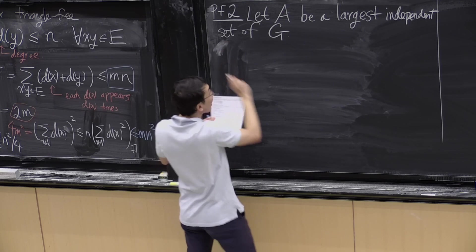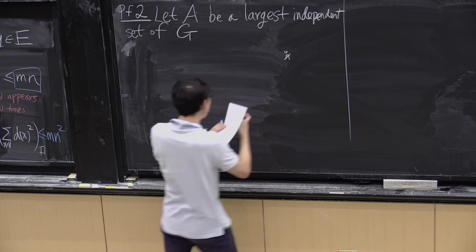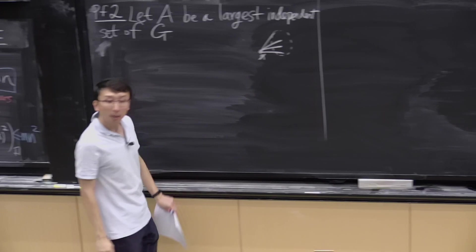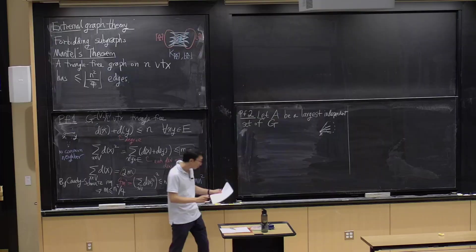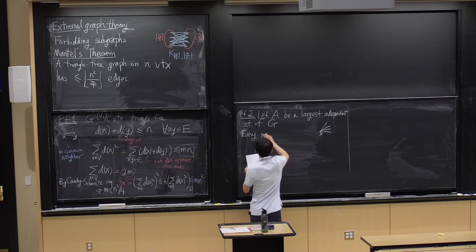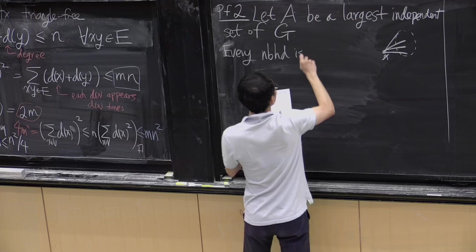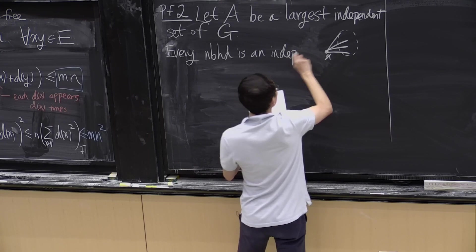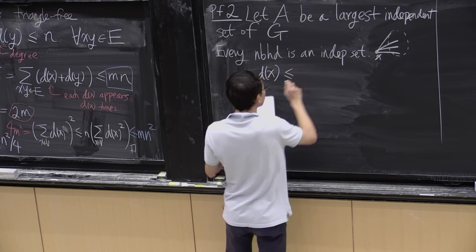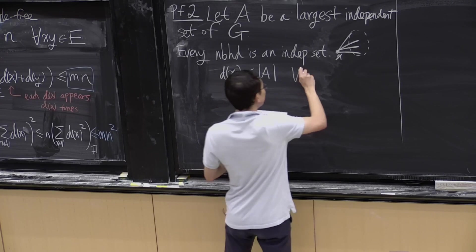Consider some vertex x and look at its neighborhood. The neighborhood must be an independent set — otherwise I get a triangle. So every neighborhood is an independent set. As a result, the degree of every vertex is at most the size of the largest independent set.